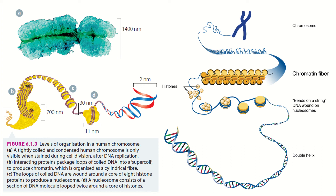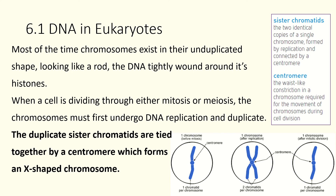Most of the time, those chromosomes are floating around our cell in their unduplicated shape, which is just a single rod — the DNA tightly wound around its histones with a centromere. When the cell is dividing through either mitosis or meiosis, which we'll be learning about next week, the chromosomes must first undergo DNA replication and duplicate. So we end up with the X shape that we all know. The main reason this is the shape we recognize is because this is when we can actually see it. The duplicated sister chromatids are tied together by a centromere — like a little belt in the middle — forming our X-shaped chromosome.